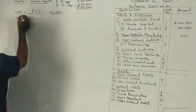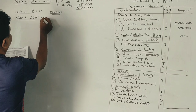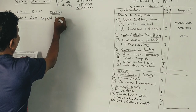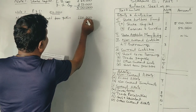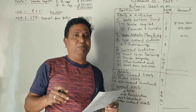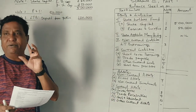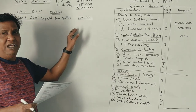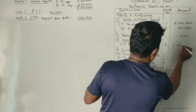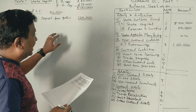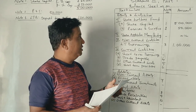Note number 3 is long-term borrowings — deposits from public. Deposits from the public are usually long-term. This is not a banking company; the deposit from the public is a long-term borrowing. Deposits from public are ₹1,00,000, so this is a non-current liability.